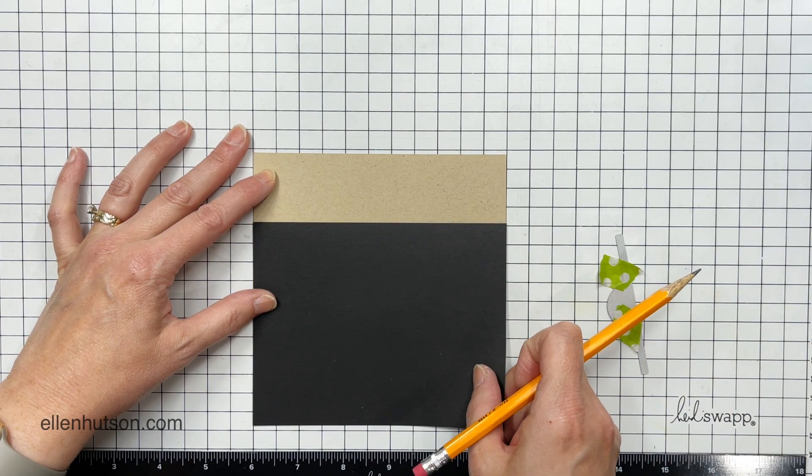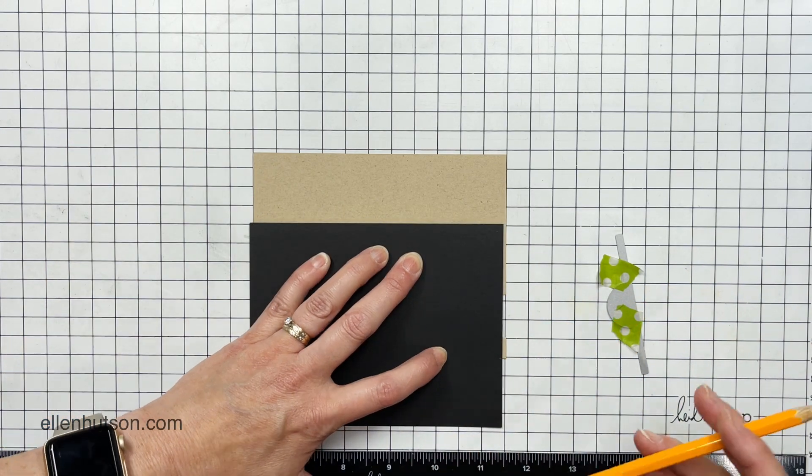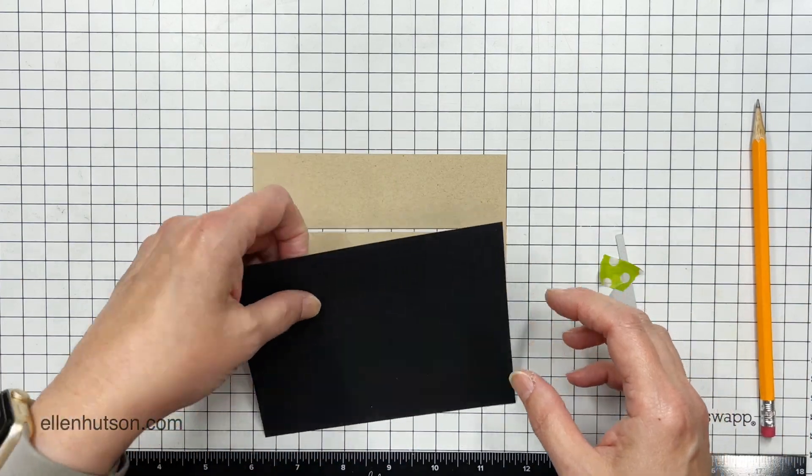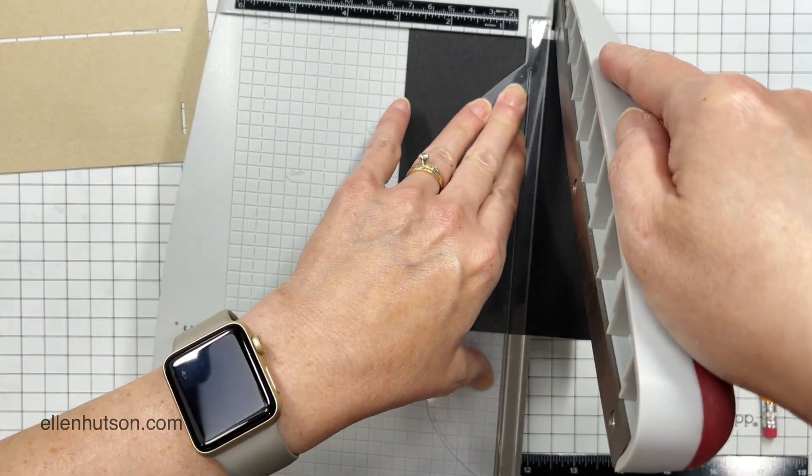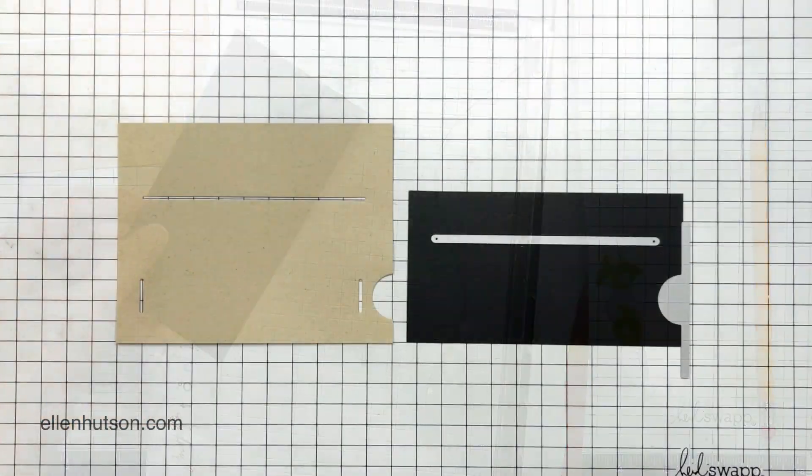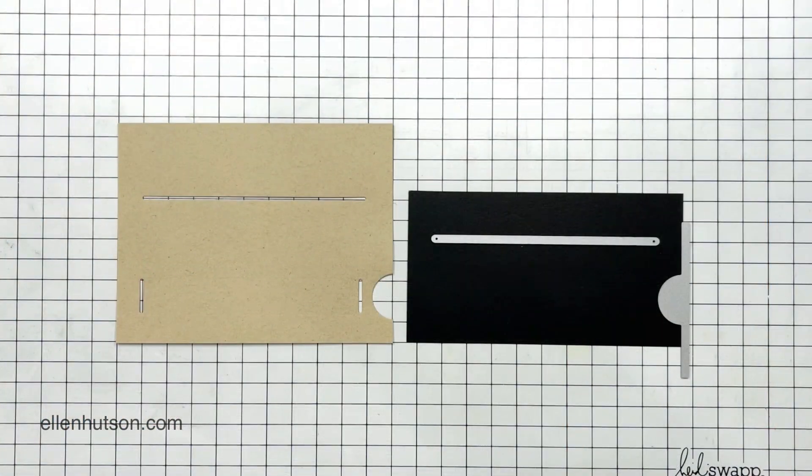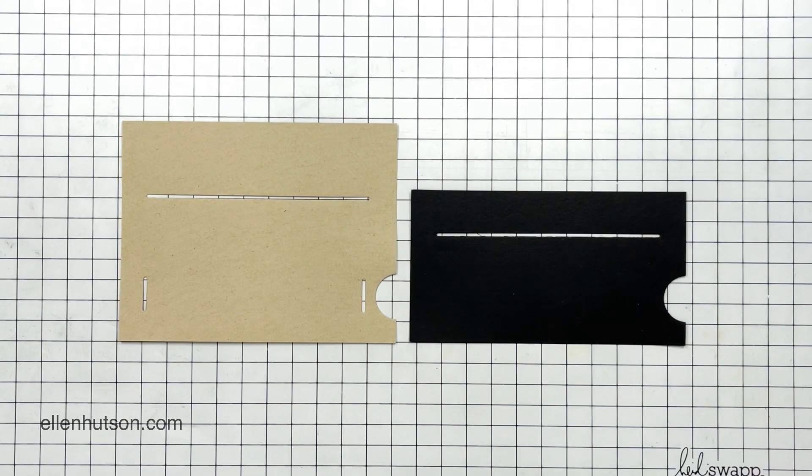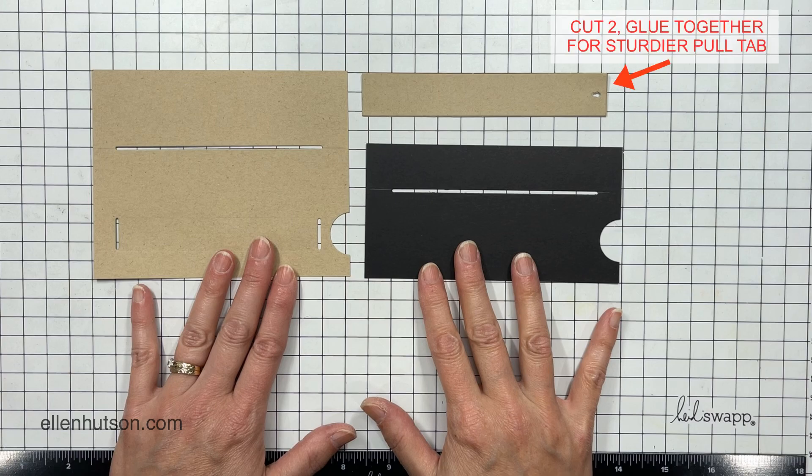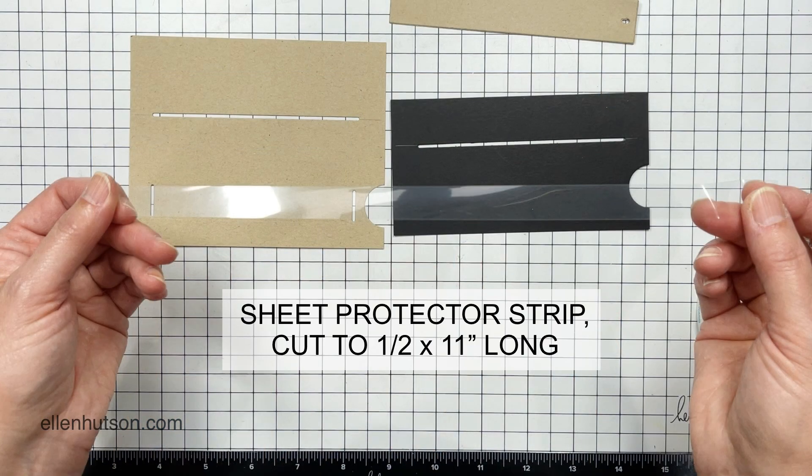I also need to determine how high the front panel needs to be to conceal everything that's going on behind it. Once I make a pencil mark and have the position of the second slot, I can go ahead and tape those down and send those through my die cutting machine so that the cover will conceal everything. I also die cut two of the pull tabs and glue those together because I was working with a lighter weight of cardstock.